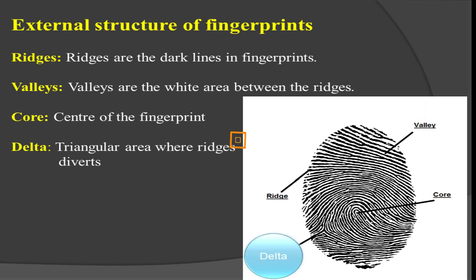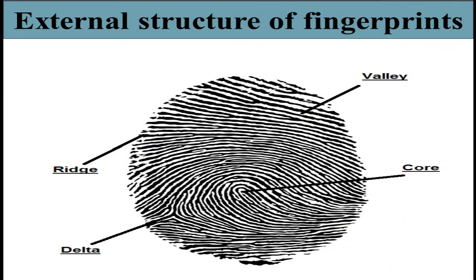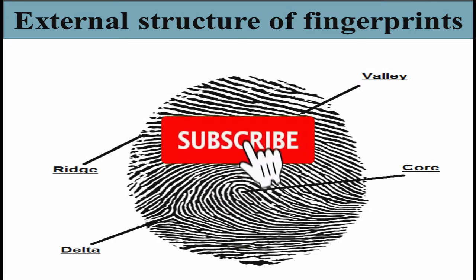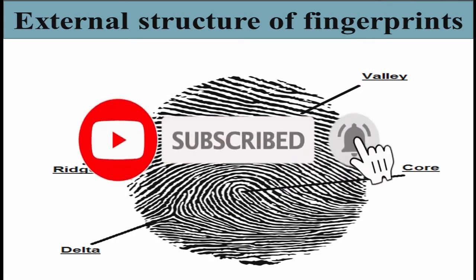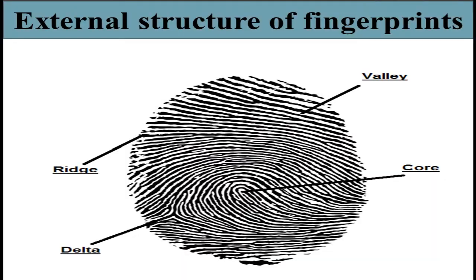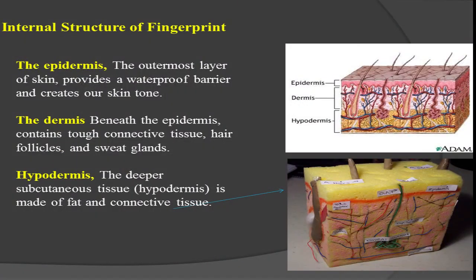Now I'm going to show another clear picture of the external structure of a fingerprint. You can see clearly: the ridges are the dark black lines on your fingerprint impression; the space between the ridges is called valley; the main center point is called core; and the triangular shape where ridges diverge is called delta.